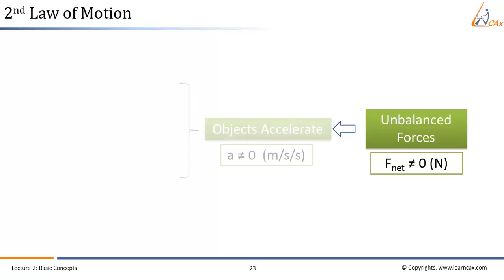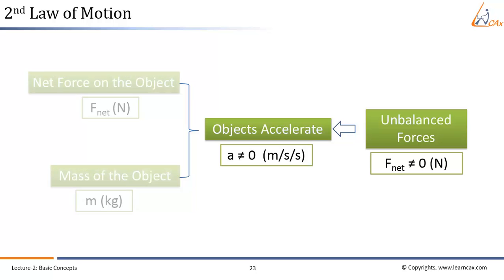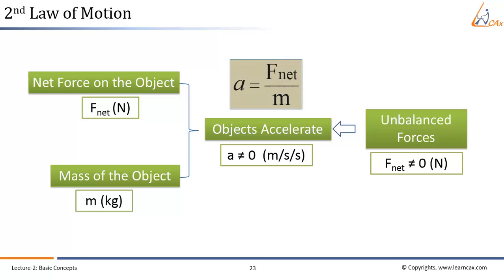Second law of motion helps to predict the behavior of objects for which the forces are not balanced. It says the presence of an unbalanced force will accelerate an object, changing its speed, its direction or both its speed and direction. The acceleration of an object depends directly on the net force acting on it and inversely on the mass of the object itself.